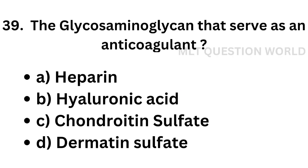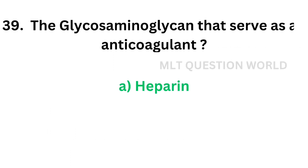Question number 39: The glycosaminoglycan that serves as an anticoagulant — option A: heparin, option B: hyaluronic acid, option C: chondroitin sulfate, option D: dermatan sulfate. The correct answer is option A, heparin. The glycosaminoglycan that serves as an anticoagulant is heparin.